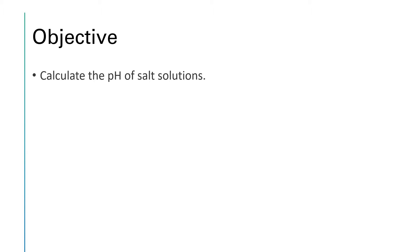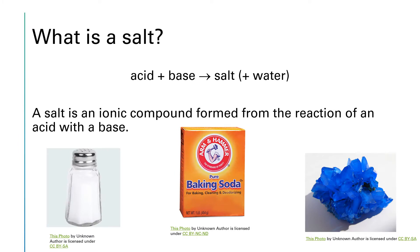In the next video, we'll work on calculating an actual number for the pH. A salt is a general class of compounds, just like acid is a class, or base is a class, or sugar is a class. There are lots of different compounds that fall under this umbrella. In the case of a salt, it is the product, other than water, of an acid-base neutralization reaction. The prototype for a salt is sodium chloride, also known as table salt. It's formed from the reaction of hydrochloric acid with sodium hydroxide, but there are lots of other compounds that are considered salts as well.